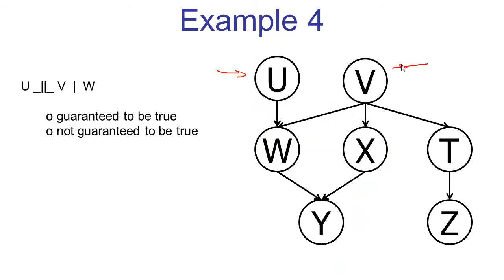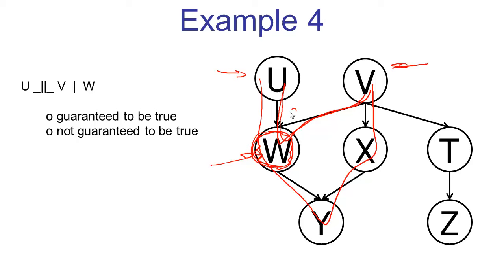We're again asked about u and v, and now w is observed. The same two paths are still in the graph connecting u and v. Let's check the shorter path first — it consists of just one triple, which is a v-structure. The v-structure has the middle node w observed. This means this v-structure is active. The v-structure is the only triple along the path, which means the entire path is active. Once we find an active path, we know that just based on the graph structure, we cannot guarantee the independence.